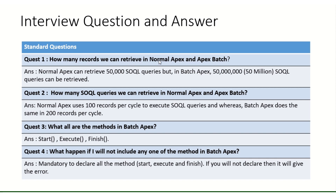How many records can we retrieve in normal Apex versus Batch Apex? Normally, we can retrieve only 50,000 SOQL records. But in Batch Apex, we can retrieve around 15 million records — so it has a much higher limit compared to normal Apex.